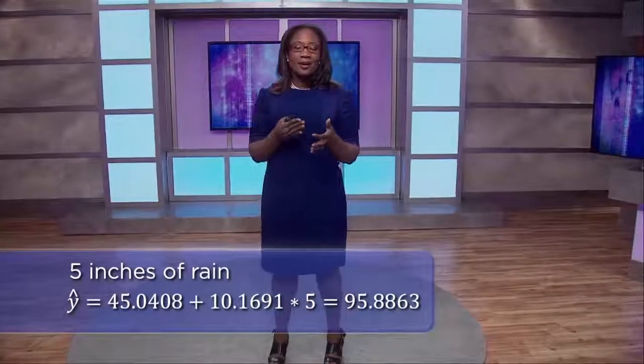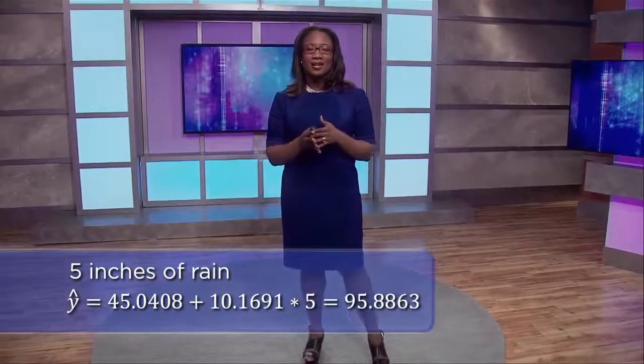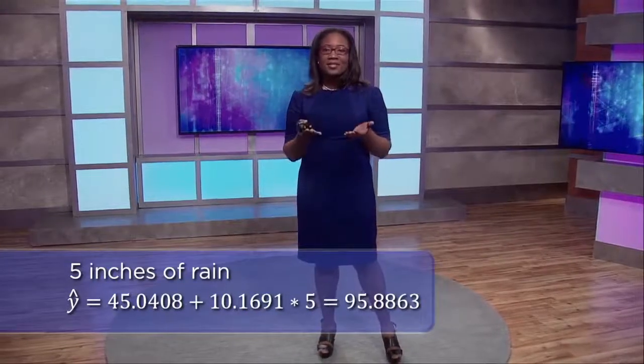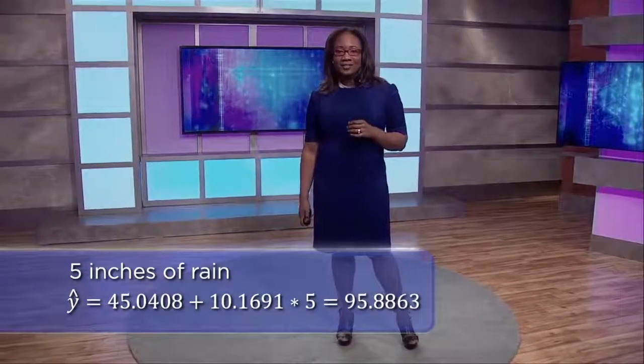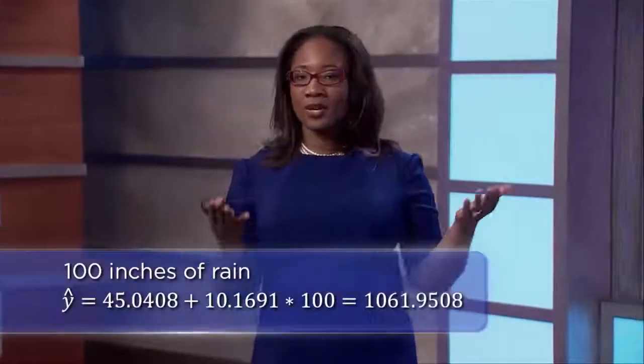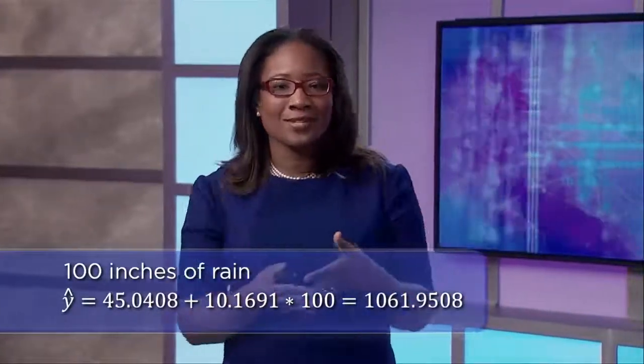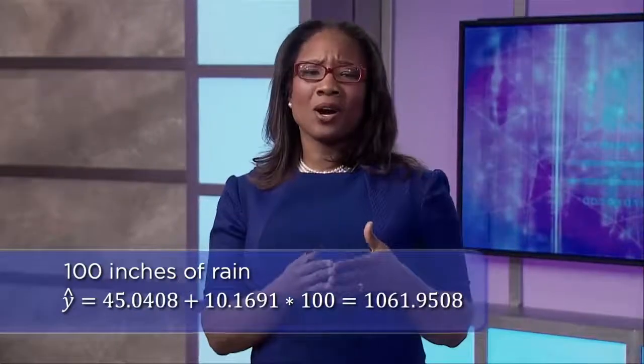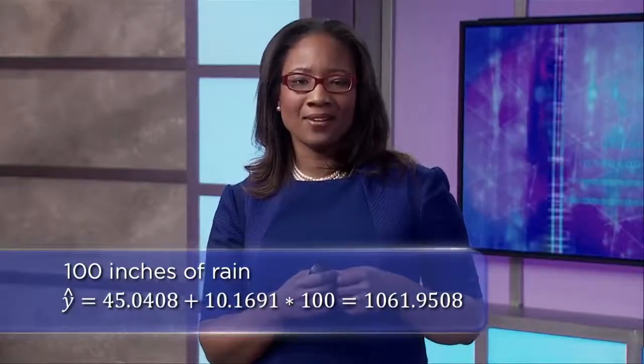We can use our regression line to predict wheat yield. For five inches of rain: ŷ = 45.0408 + 10.1691 × 5, which predicts a wheat yield of slightly over 95 inches. What if we wanted to predict for 100 inches of rain? Plugging 100 into the regression equation gives us 1,061.95 inches of wheat — some pretty tall wheat! In fact, if that prediction were true, we'd probably all be wheat farmers in Kansas right now. This illustrates why extrapolation is so dangerous.